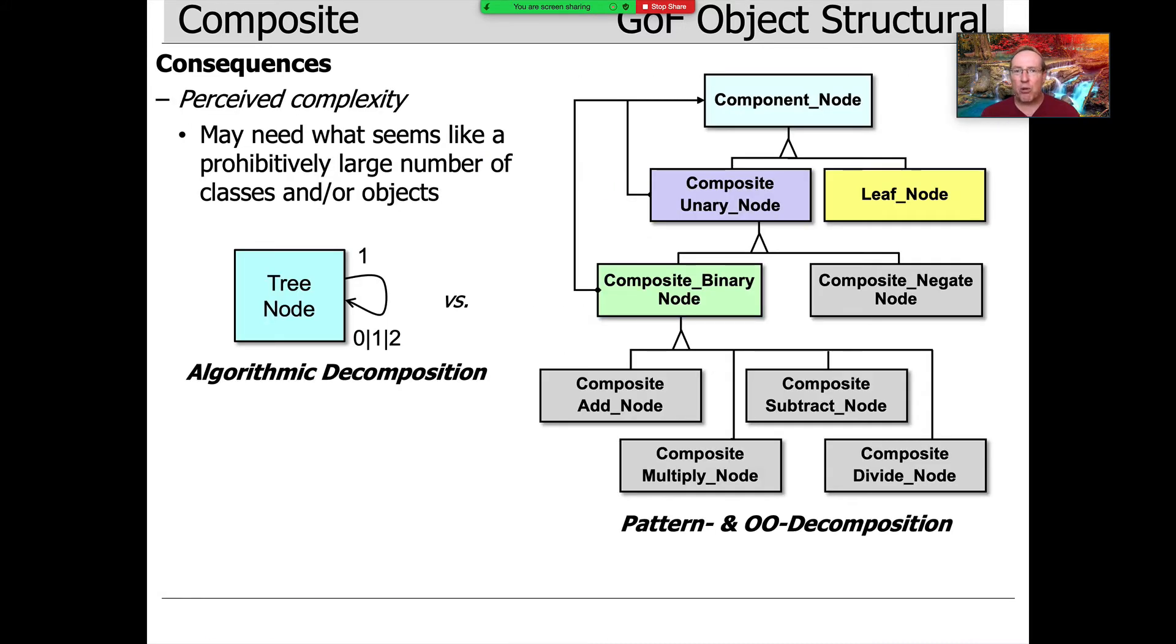So those are the pluses. There's very rarely perfection with patterns. They don't solve every imaginable problem, and they always come with some liabilities as well. Everything is not unicorns and rainbows, as I like to say. One of the things you get with patterns like composite is perceived complexity. Whereas before, if you did an algorithmic decomposition, you might have a single class called tree node that's what we call a god class that everything relies on. And that's simple at one level because there's just one of them.